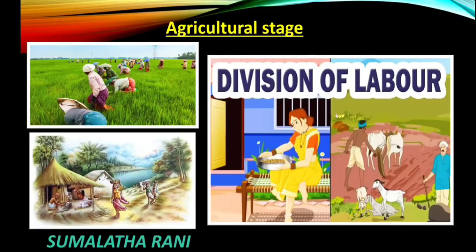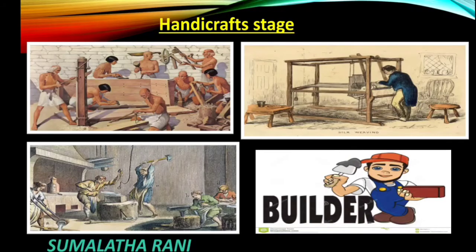The agricultural stage came next. After several years of the pastoral stage, people learnt the art of growing crops. They started living at a fixed place and lived in groups. Commercial activity started. Villages and communities came into existence, and a simple form of division of labor started in this stage.